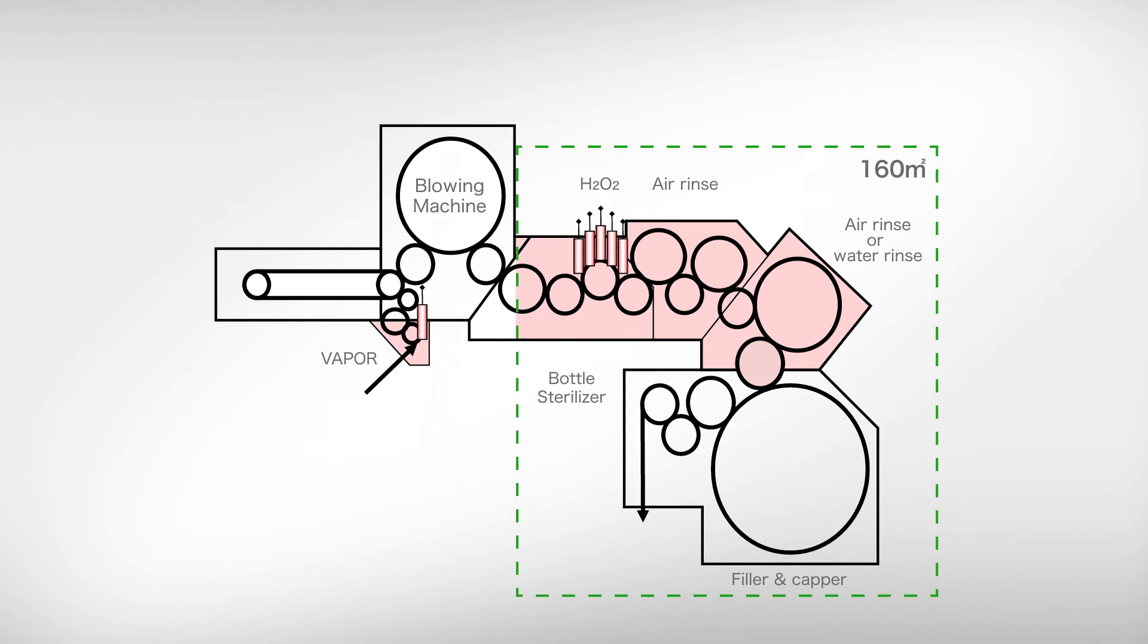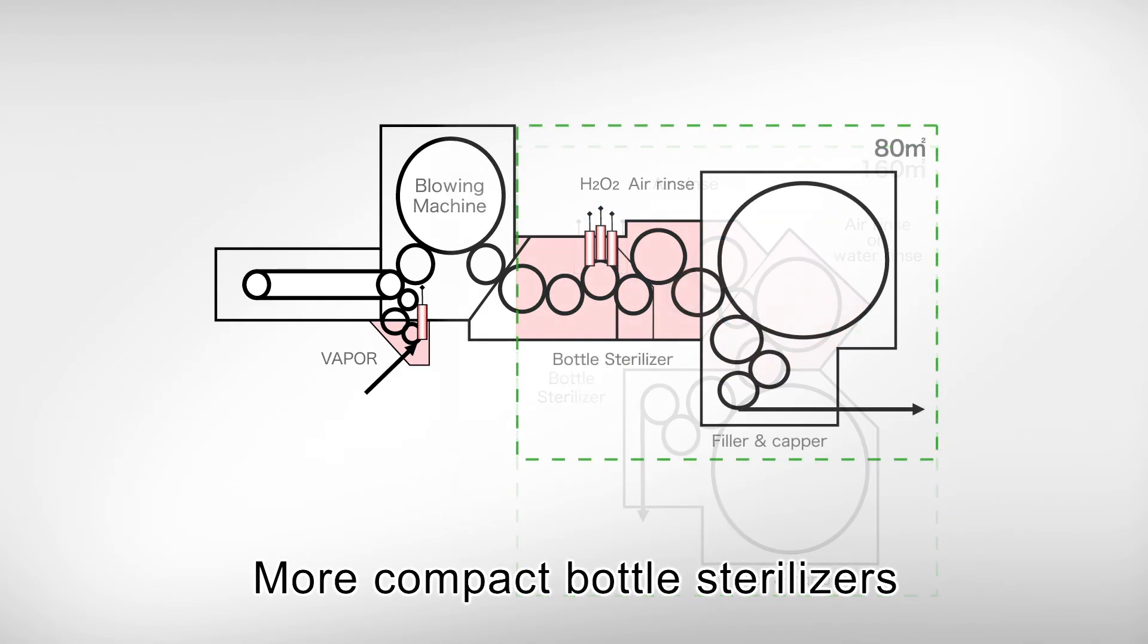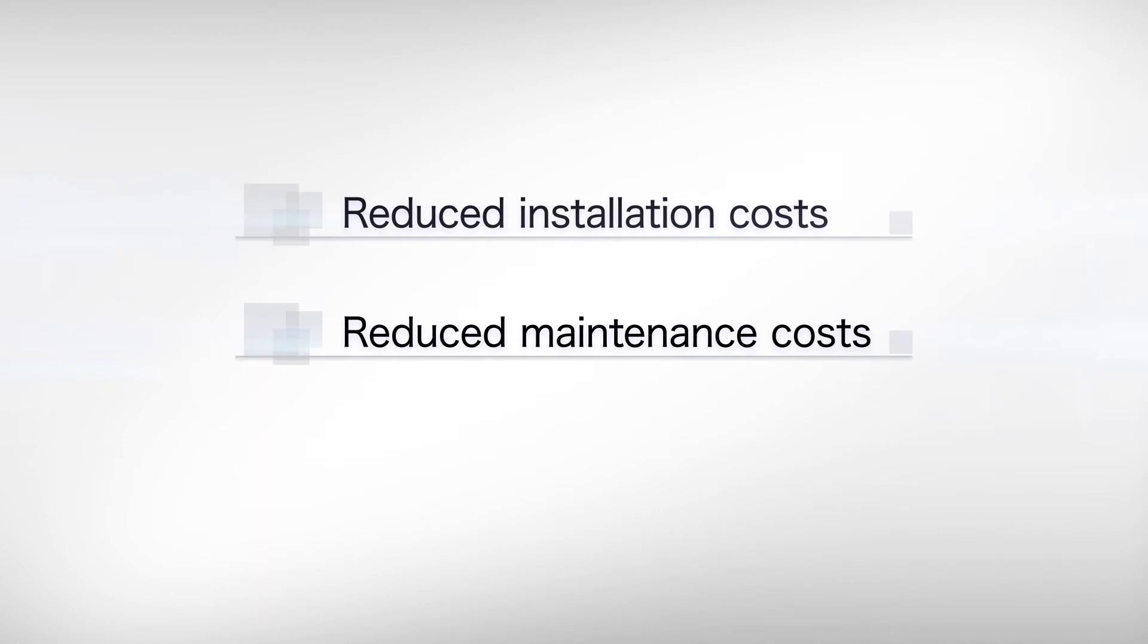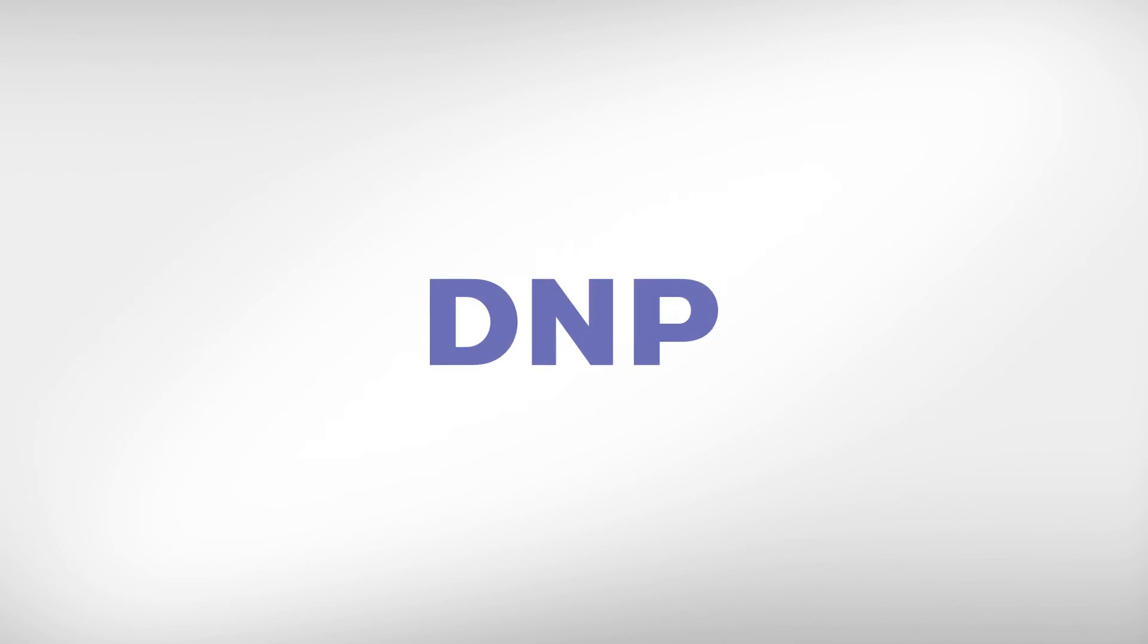Preform sterilization allows bottle sterilizers to be made more compact. This reduces initial installation costs and maintenance costs, and running costs are reduced by about 40%.